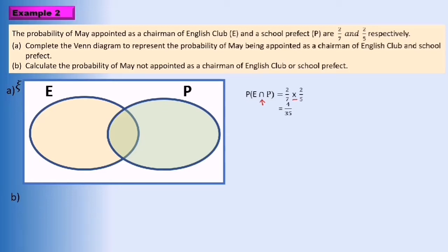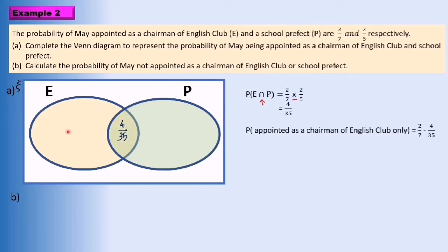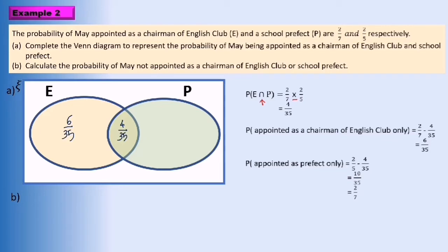After we get the probability of event E intersect P equals 4 over 35, we place that in the diagram. The probability of event E only is 2 over 7 minus 4 over 35 equals 6 over 35. Then the probability of event P only is 2 over 5 minus 4 over 35, which equals 10 over 35, simplified to 2 over 7.